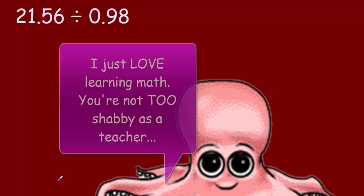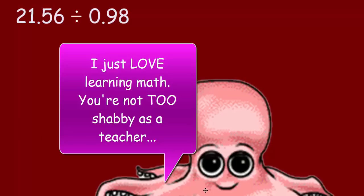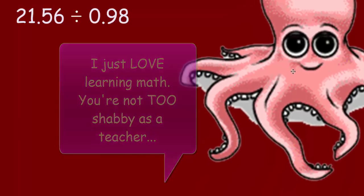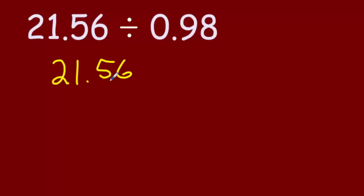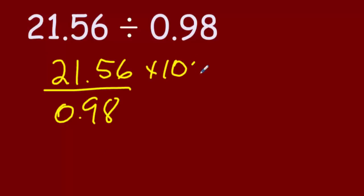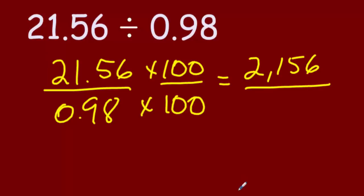Oh my goodness, Petunia, you're here again. You just love learning math — that's awesome. Now we have a whole new problem: 21 and 56 hundredths divided by 98 hundredths. First thing, let's rewrite that division expression as a fraction: 21 and 56 hundredths over 98 hundredths. Now we know that before we divide, we want to go ahead and rename the divisor as a whole number. We're going to do it by 100, of course, because the divisor is in the hundredths. We want to make a whole number. Now we end up with 2,156 and of course here we end up with 98.